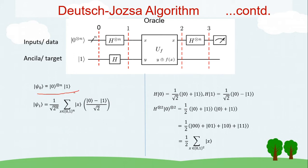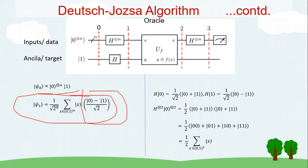At station zero, the state of all qubits is expressed as n qubits in state zero — that's our starting point. After applying the Hadamard gate, at station one the state of all qubits is given by a known expression. For the ancilla qubit in state one we know the Hadamard result. For the n qubits in state zero, the Hadamard applied on state zero gives (|0⟩+|1⟩)/√2, and on state one gives (|0⟩−|1⟩)/√2.